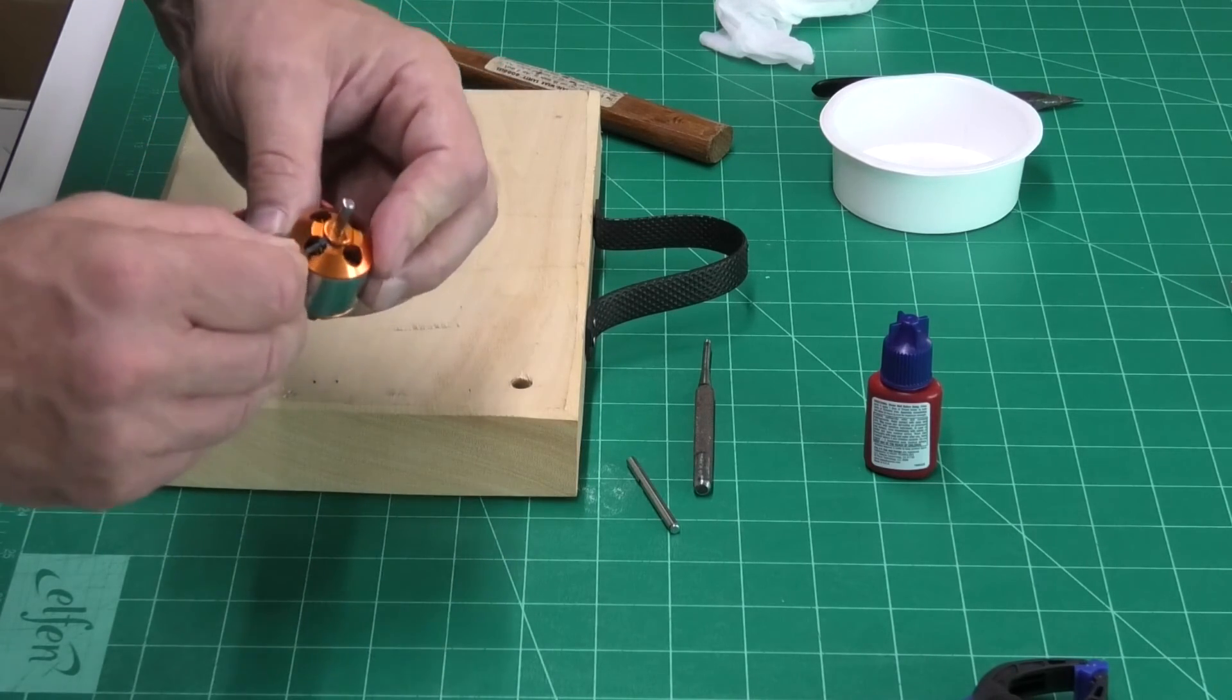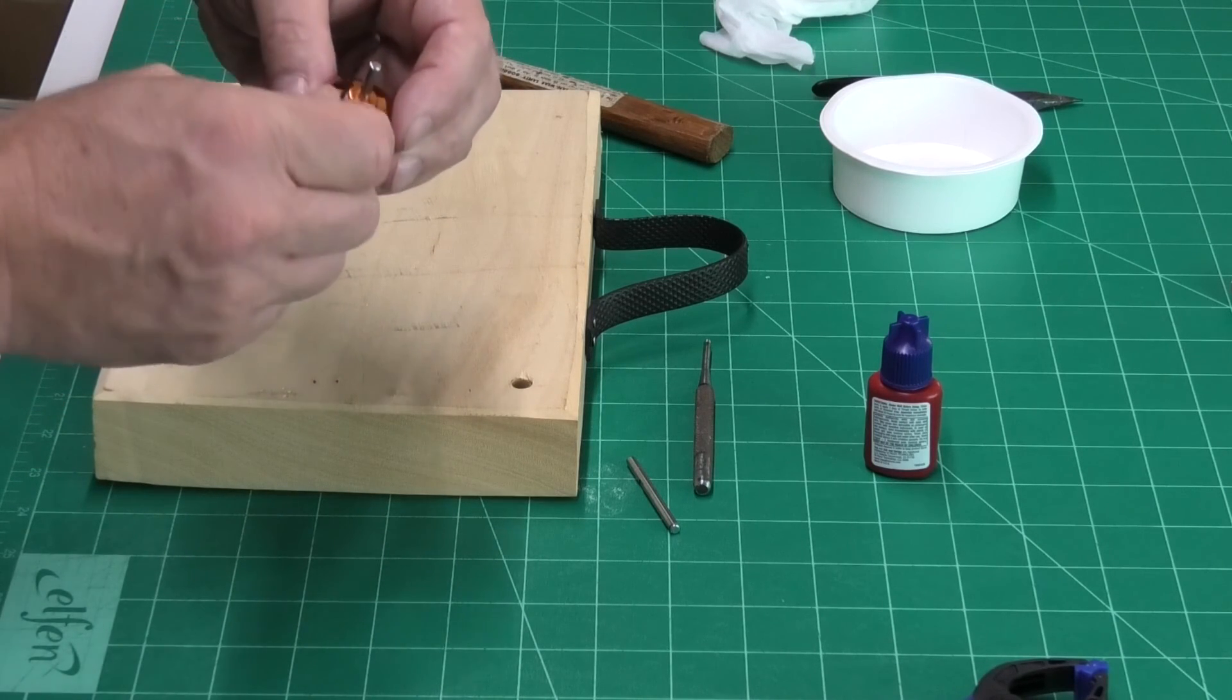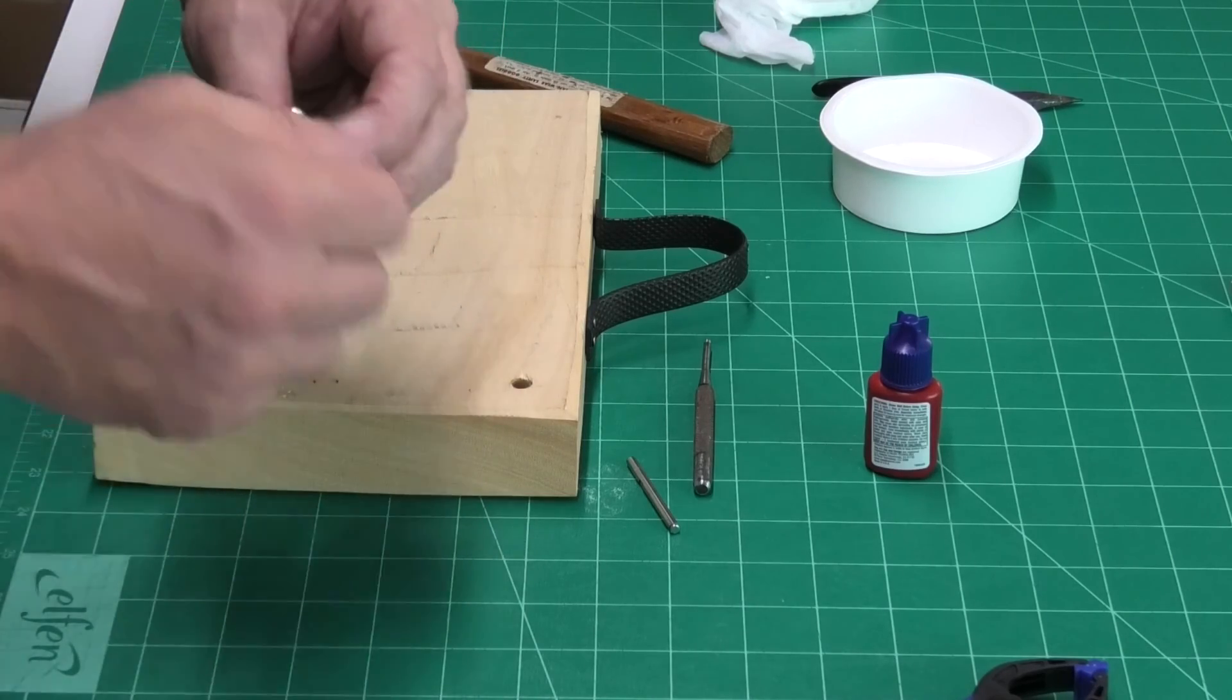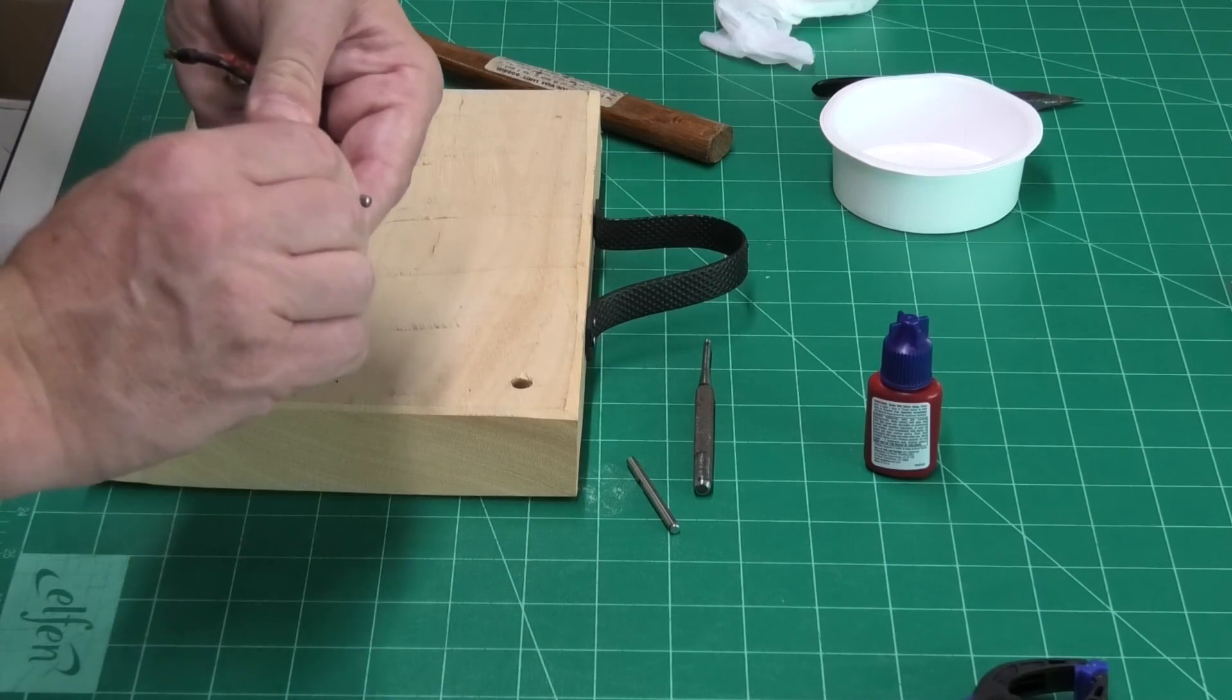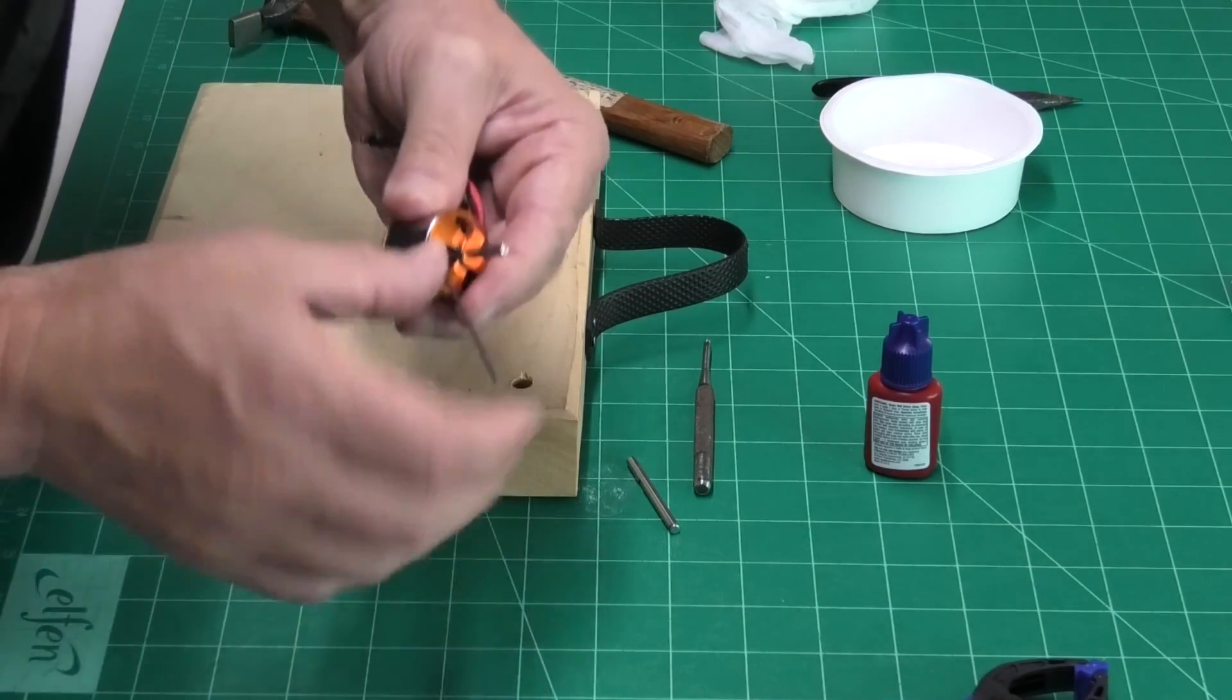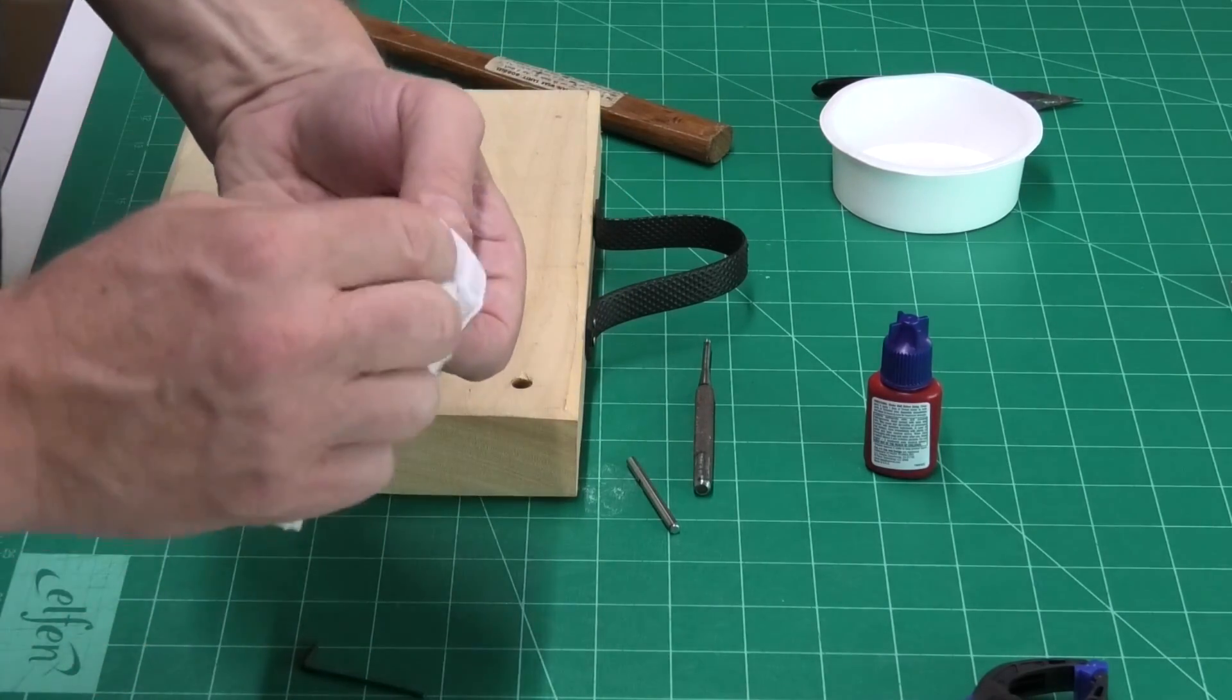So, we'll put the grub screw back in. Just want to make sure. Okay, there we go. Okay. Nice and tight, but not too tight. Don't want to do any damage. Just wipe off a little bit of that excess.